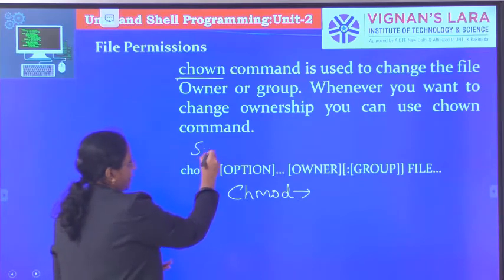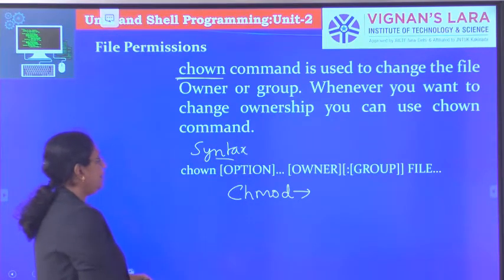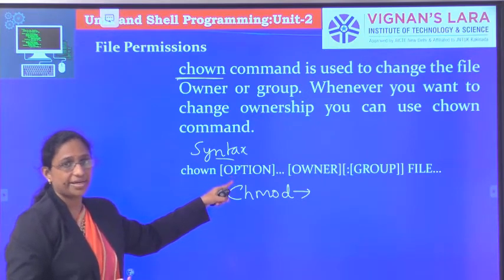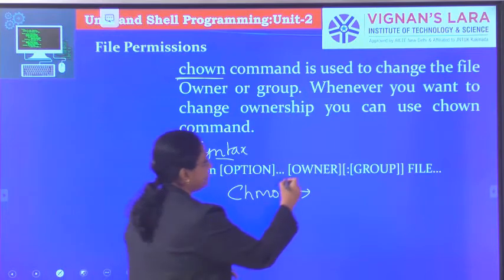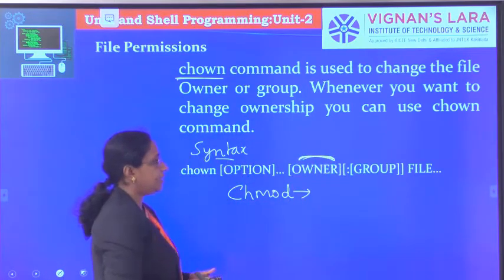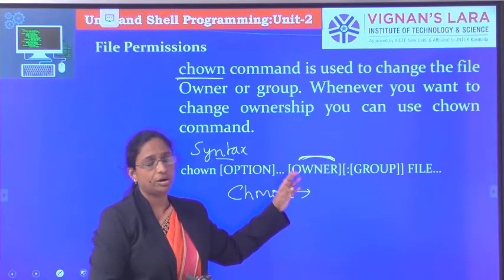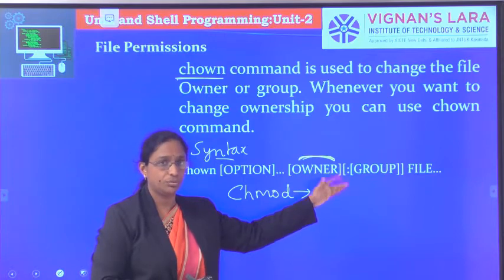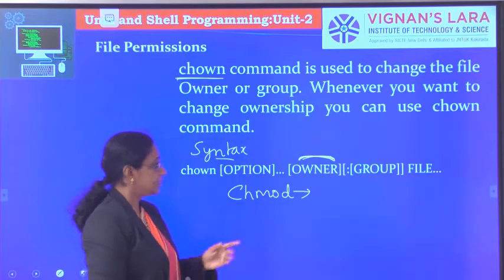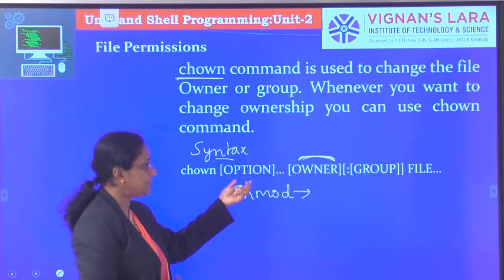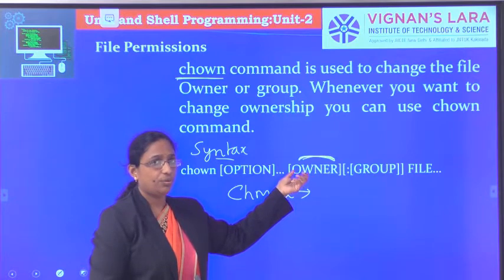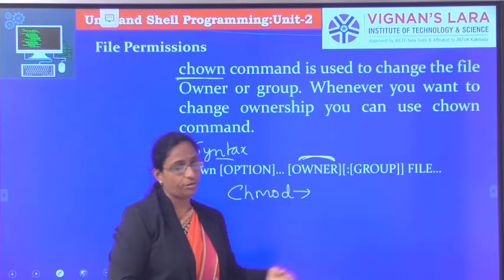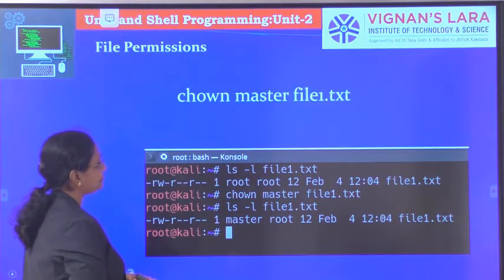The syntax of the chown command is: chown [option] new-owner:new-group file. You can use options like -R for recursive. You specify the new owner to whom you want to change the ownership, and the new group name, followed by the file name.